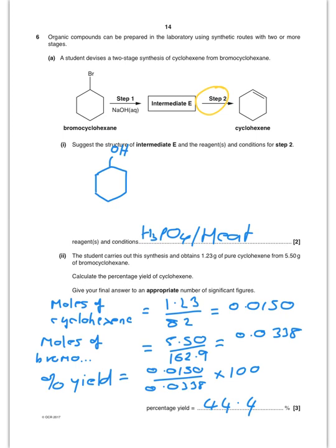Percentage yield. Quite nice. So moles of cyclohexane is just mass over the molar mass. Moles of bromocyclohexane, again mass over molar mass. And then it's just one over the other to give you 44.4%.